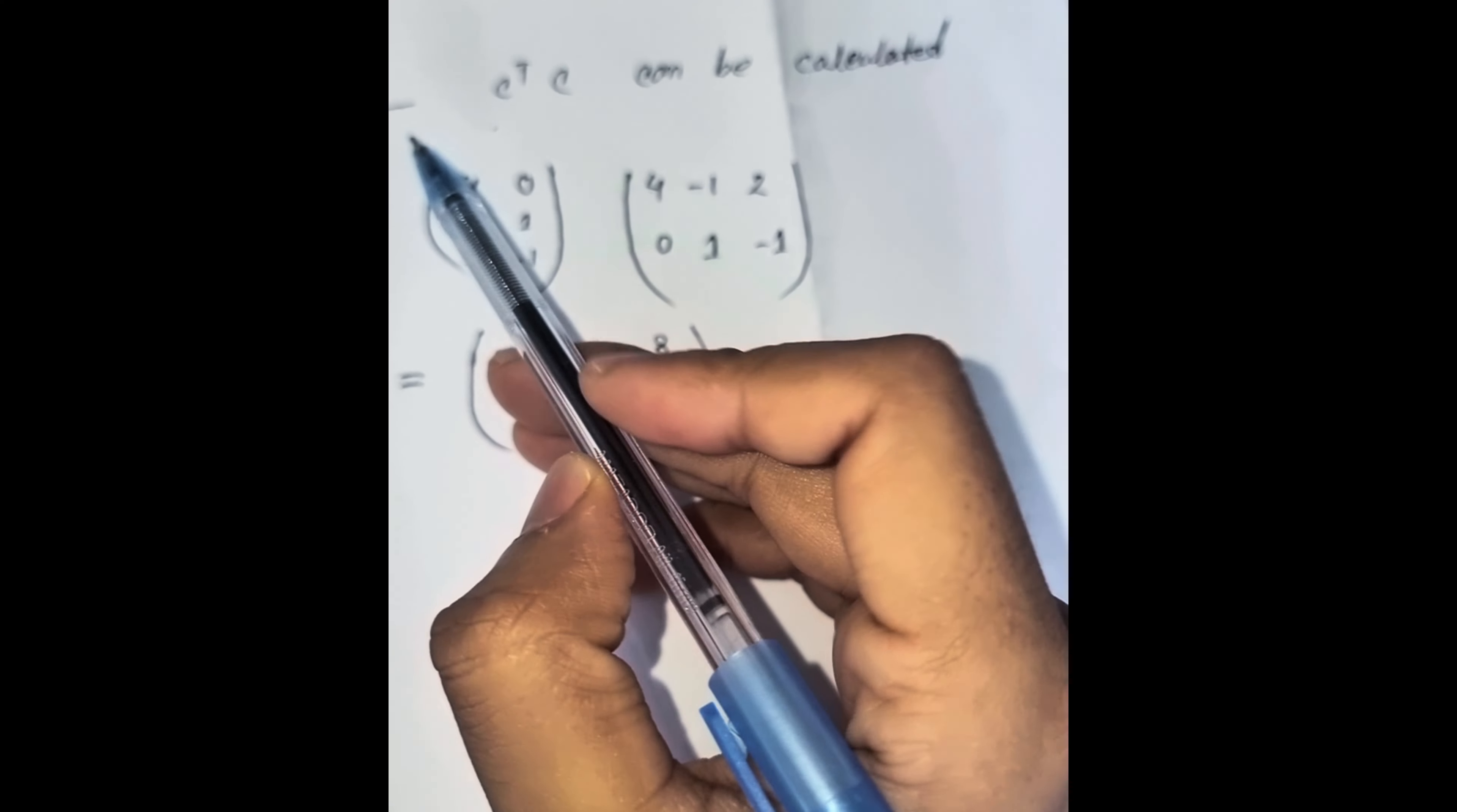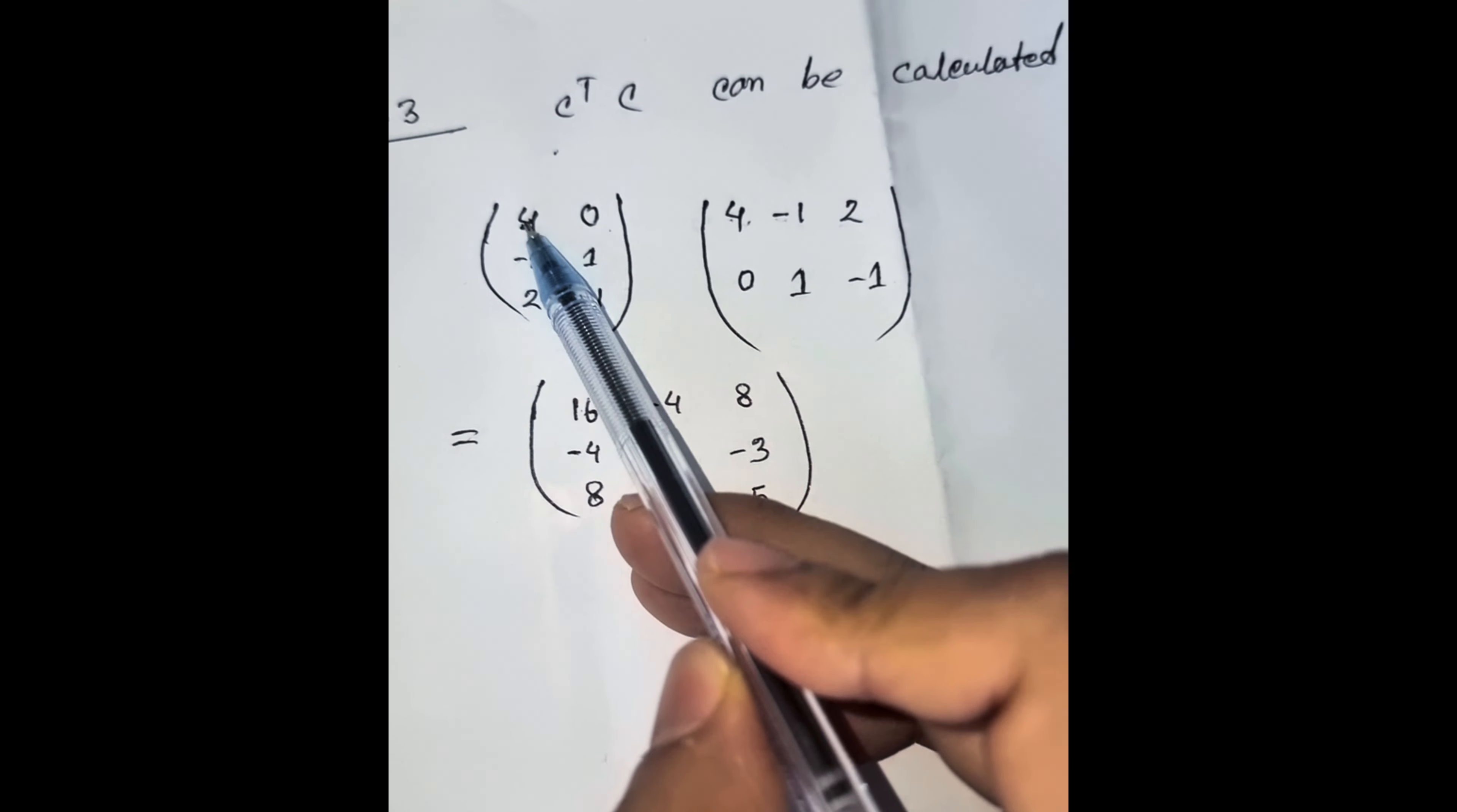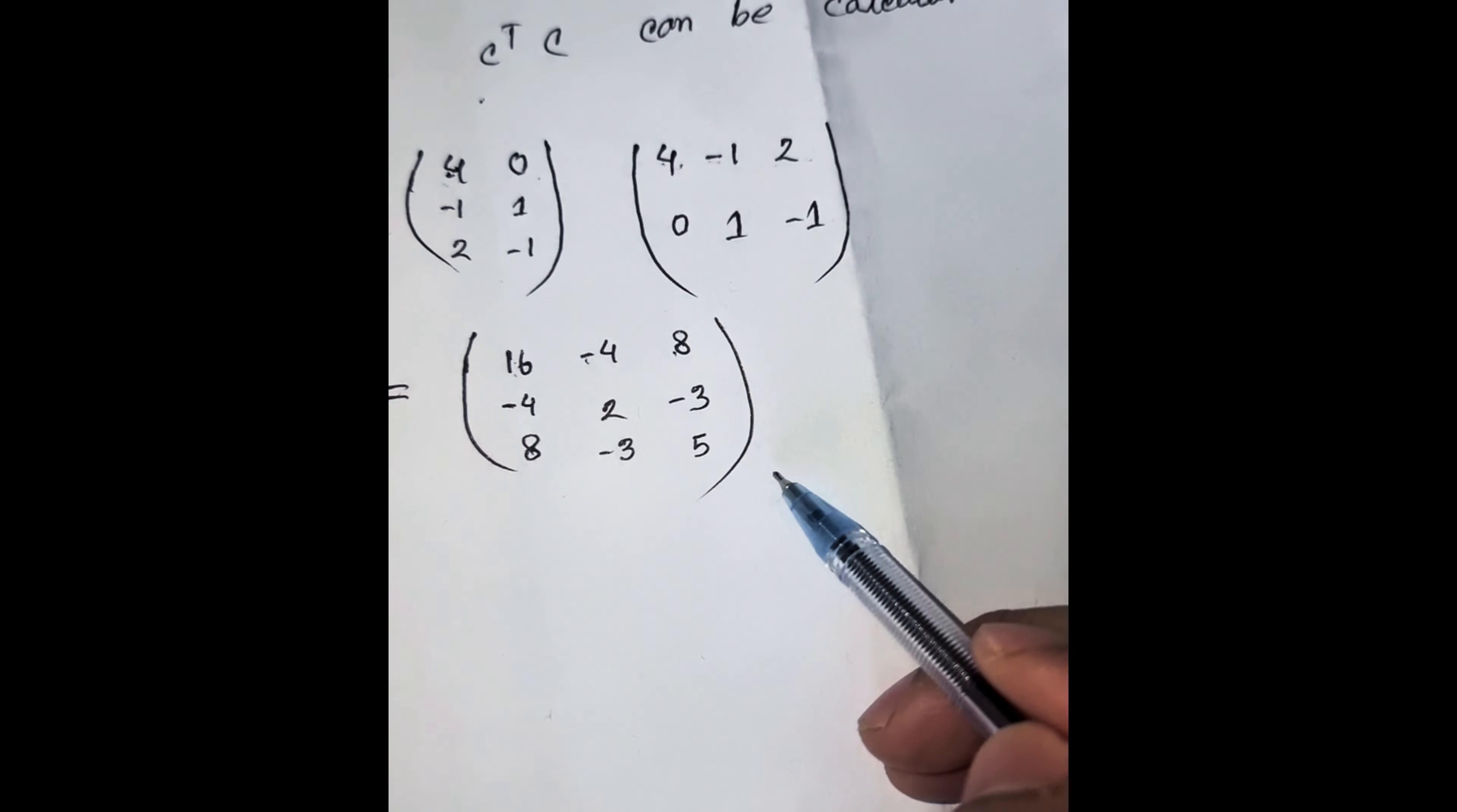So here is our question three. The question values here 4, 0, and this value. So we can calculate this way: 4 into 4 is 16, 4 into minus 1 is minus 4, and 4 into 2 is 8. So this way we can calculate all things then we got this answer.